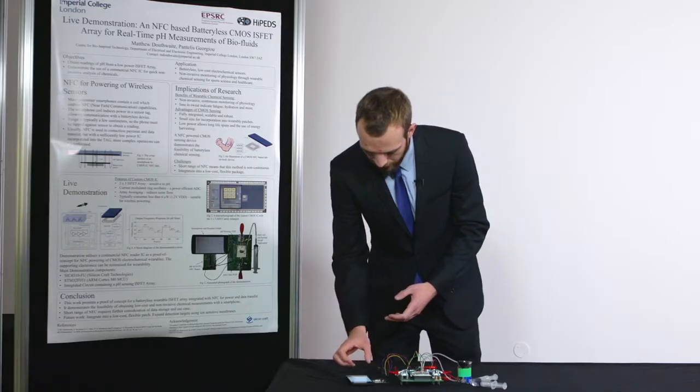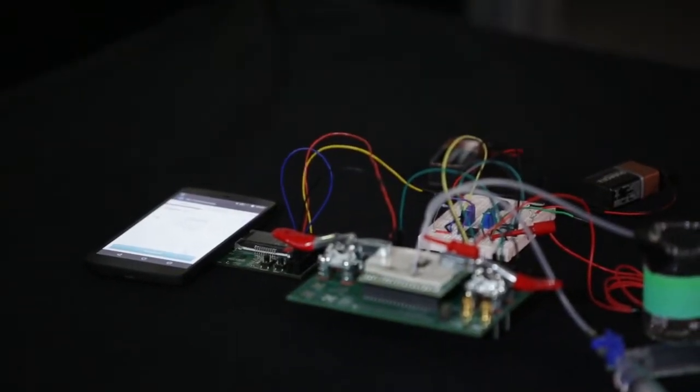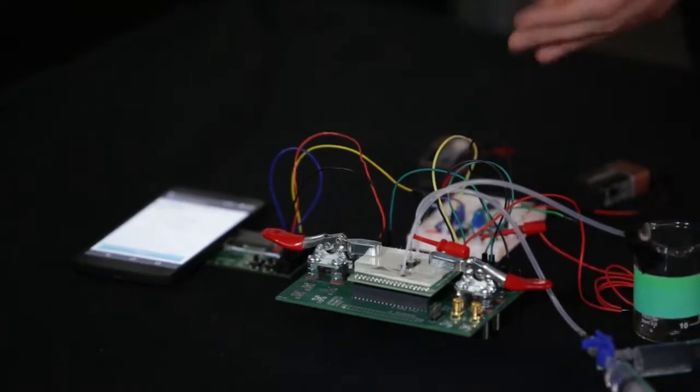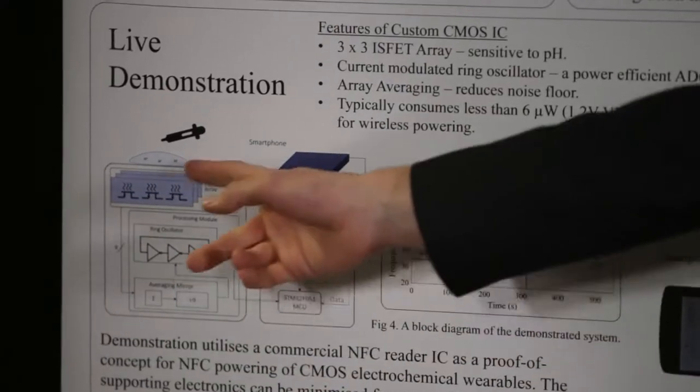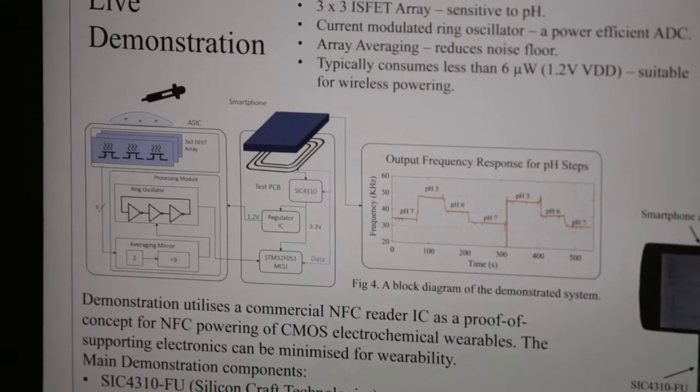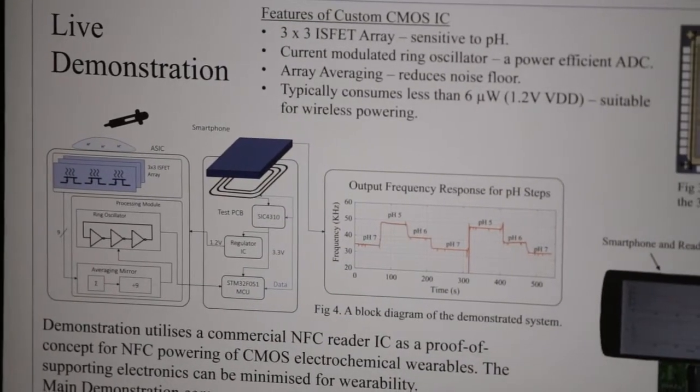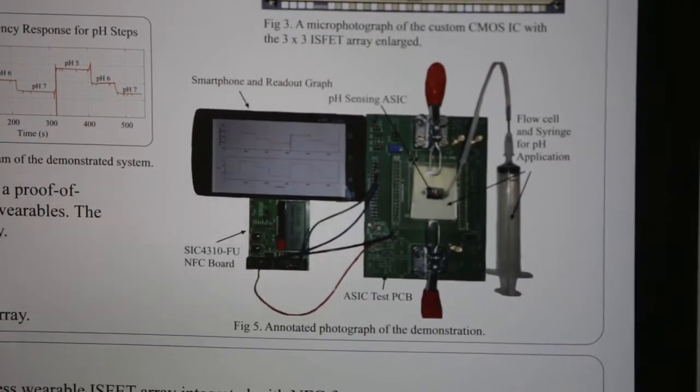So the phone provides power. It's regulated down to a stable 1.2V supply for the microchip. The microchip detects the pH and onboard converts it into a frequency. We have a pH to frequency converter on the microcontroller, and this allows us to get a nice simple analog-to-digital conversion for detection. The phone also provides enough power to power a microcontroller, which then measures the frequency and, for the purposes of this demonstration, displays it on an LCD screen. But in the future it could be expanded to show on an app.